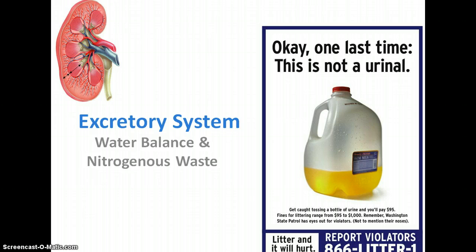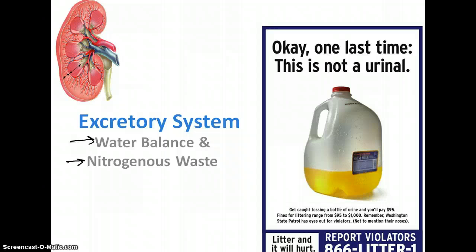Essentially what it's doing when it removes waste is it's keeping balance in your blood and your body — not only the amount of water but the amount of stuff that's dissolved in it. In addition, it regulates the buildup of nitrogenous waste such as ammonia that your cells produce when they're breaking down proteins. In doing these two seemingly small things, it actually has a really big role in our blood pressure, the osmolarity of our blood, and our pH. So our kidneys and our excretory system play a pretty big role in that.